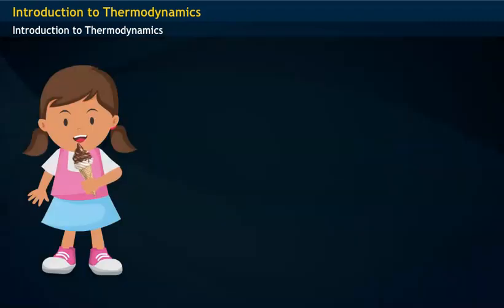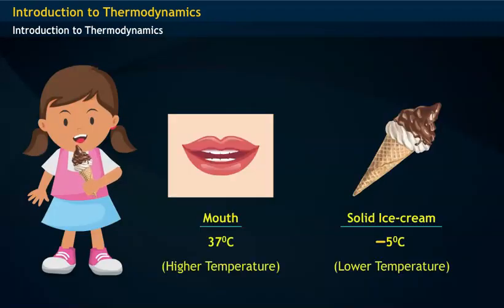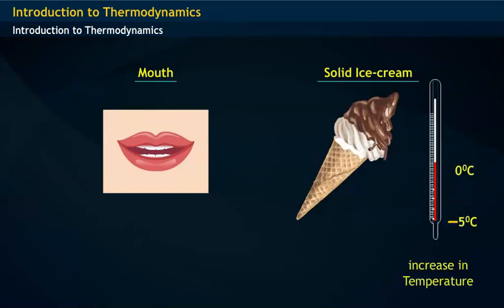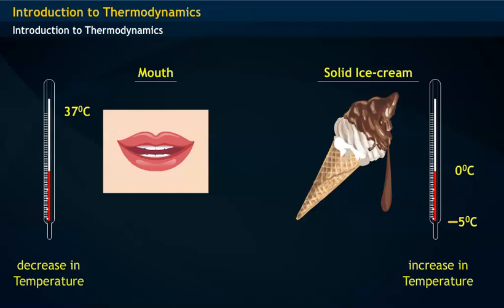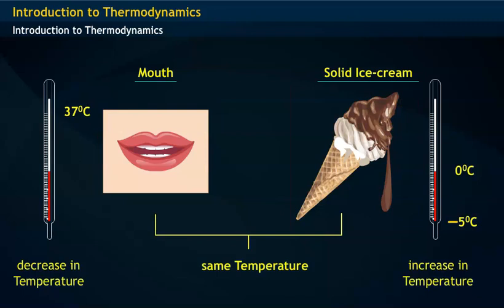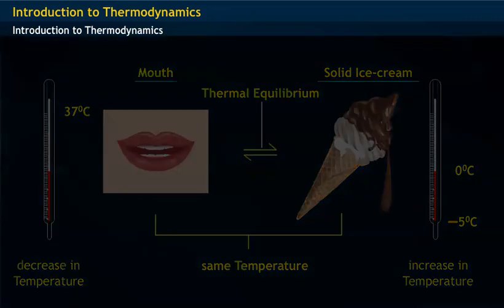When we eat an ice cream, the heat energy from mouth is transferred to the ice cream. This heat energy supplied by mouth increases the temperature of solid ice cream. At the same time, the temperature of mouth decreases from 37 degrees. At a particular stage, both the mouth and solid ice cream have same temperature. At this stage, both mouth and solid ice cream are said to be in thermal equilibrium.